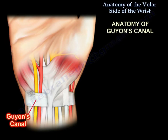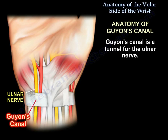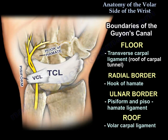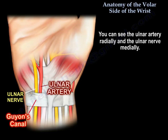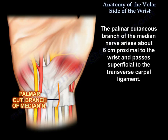What is the anatomy of Guyon's canal? Guyon's canal is a tunnel for the ulnar nerve. The floor of Guyon's canal is the transverse carpal ligament, which was the roof of the carpal tunnel. Radially is the hamate and ulnarly is the pisiform, and the roof is the volar carpal ligament. The ulnar artery lies radially and the ulnar nerve lies medially.